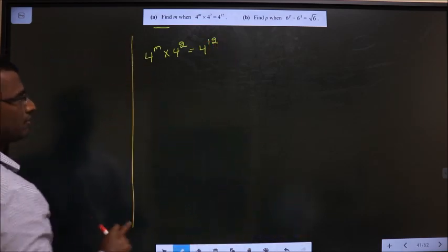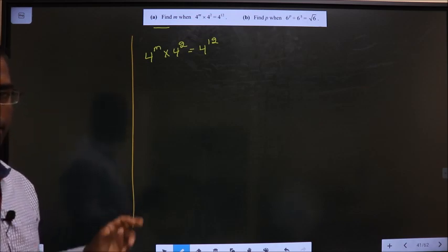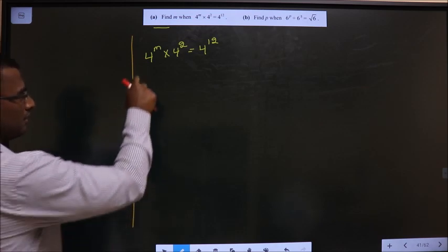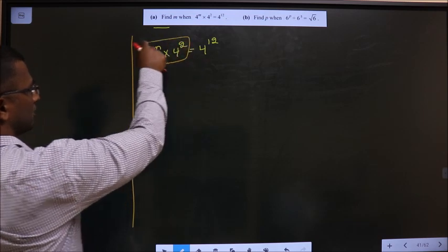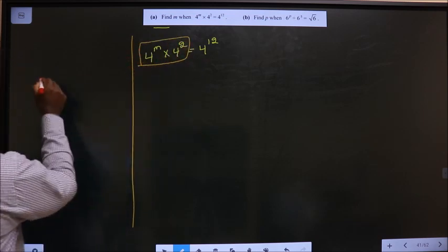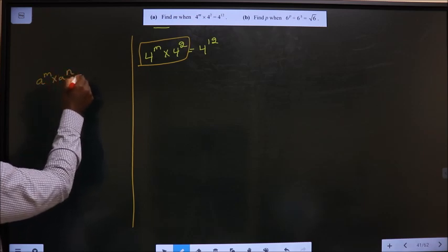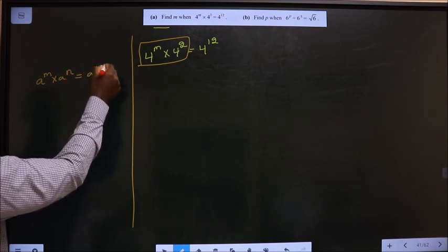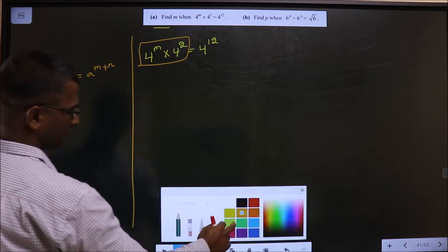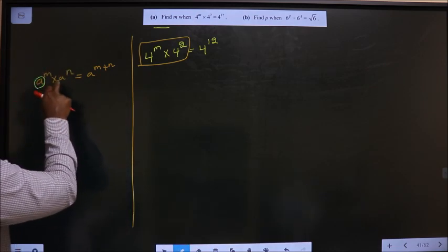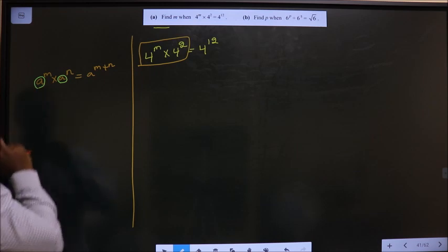You need to find m. How can you simplify this? What formula will you apply? When you have a^m × a^n, the result is a^(m+n). When bases are same and multiplication is present...